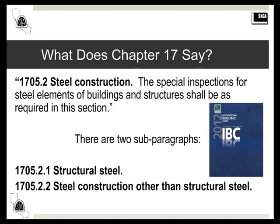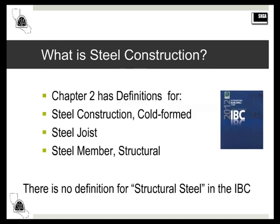Section 1705.2 refers to steel elements and has two subparagraphs: structural steel, and everything else other than structural steel. All the special inspection requirements for structural steel have been removed from the IBC and replaced by a reference to the Quality Assurance Provisions of AISC 360, the Specification for Structural Steel Buildings. We'll be getting into that in a lot of detail later on.